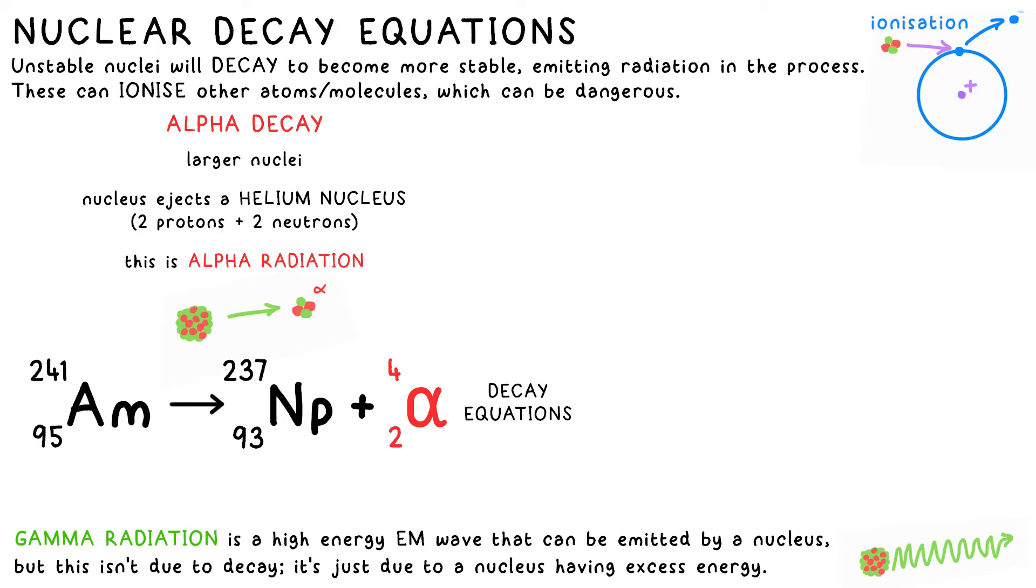It's just maths. 95 goes to 93 plus 2. And the mass is similar. 241 goes to 237 and 4. There is actually a nucleus that has the numbers 2 and 4. It's a helium nucleus. You do need to know that, but AQA also say that you should write HE instead of an alpha symbol in a decay equation. I much prefer saying alpha. But you should get the mark either way.